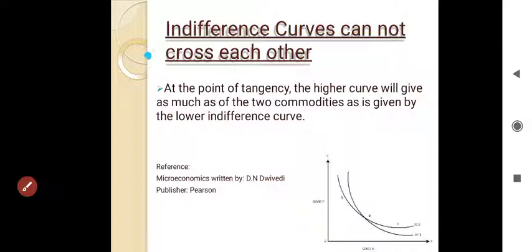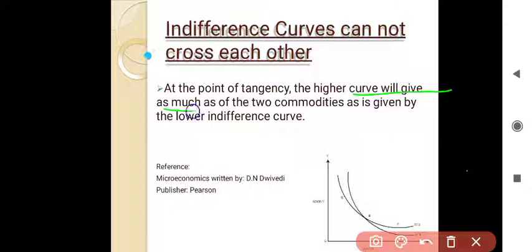Next, indifference curves cannot cross each other. At the point of tangency, the higher curve would give as much of the two commodities as is given by the lower indifference curve, which would be contradictory.